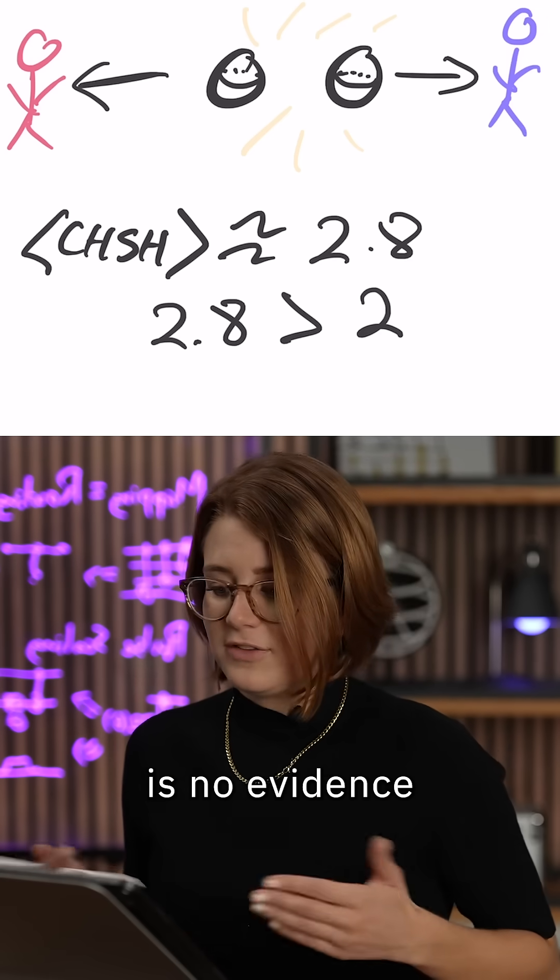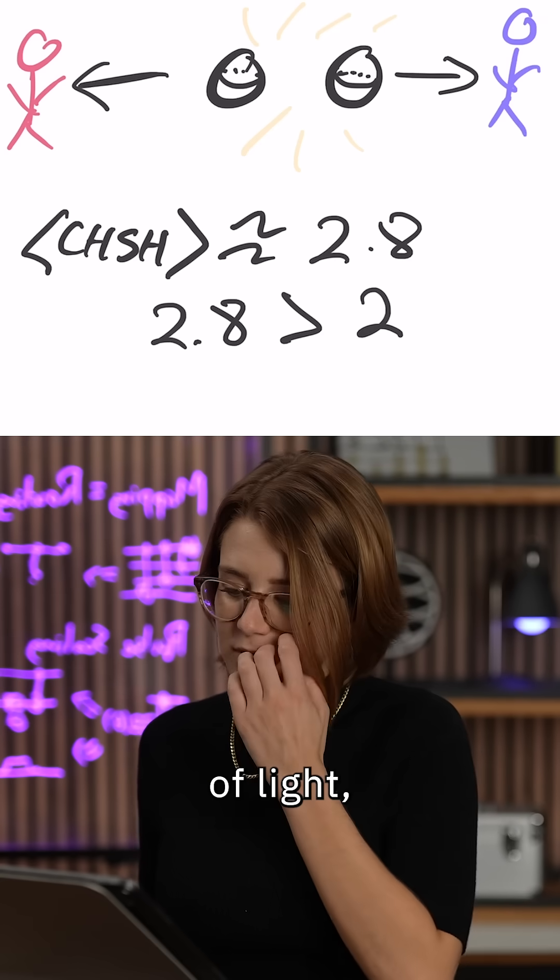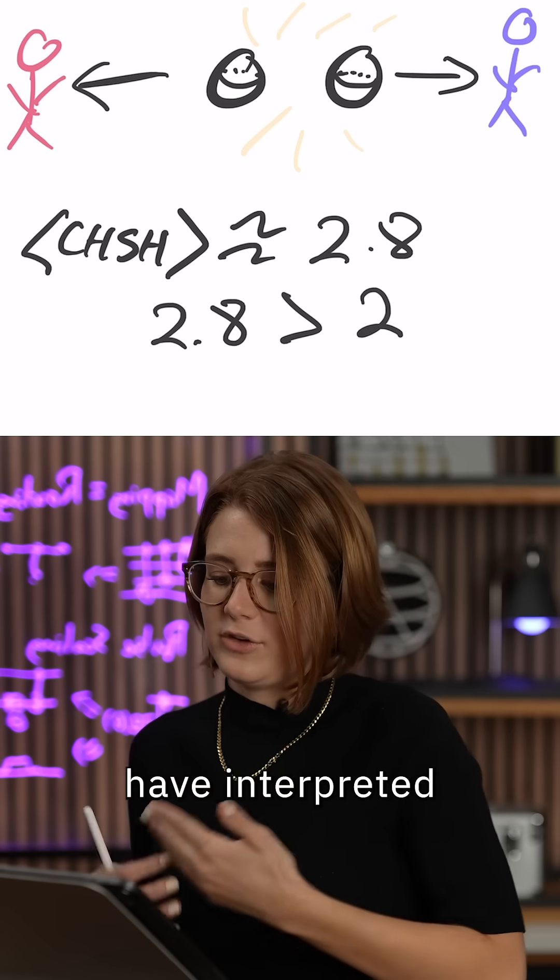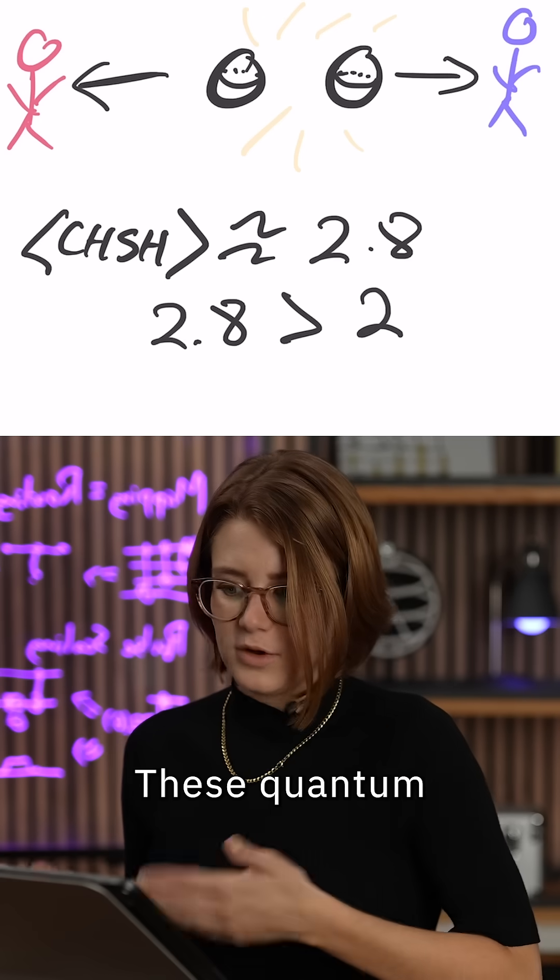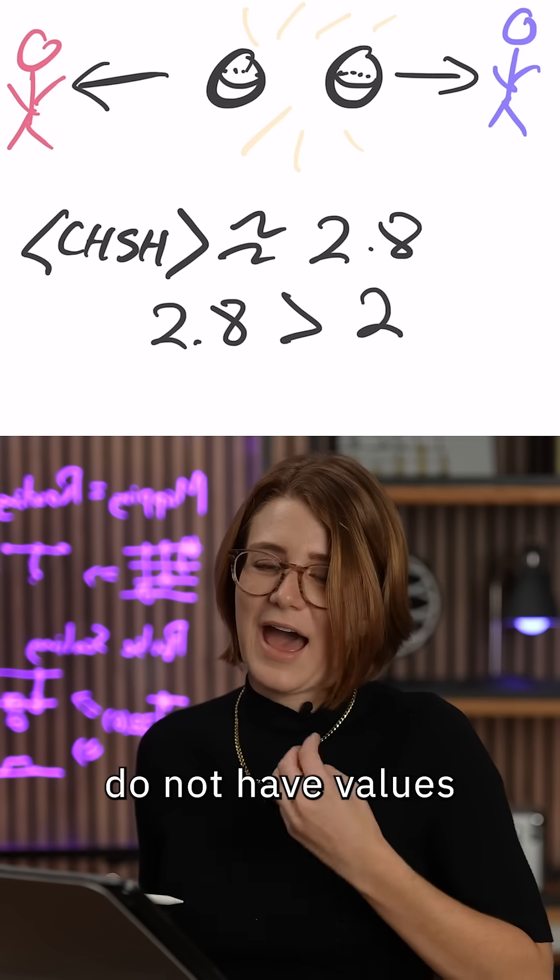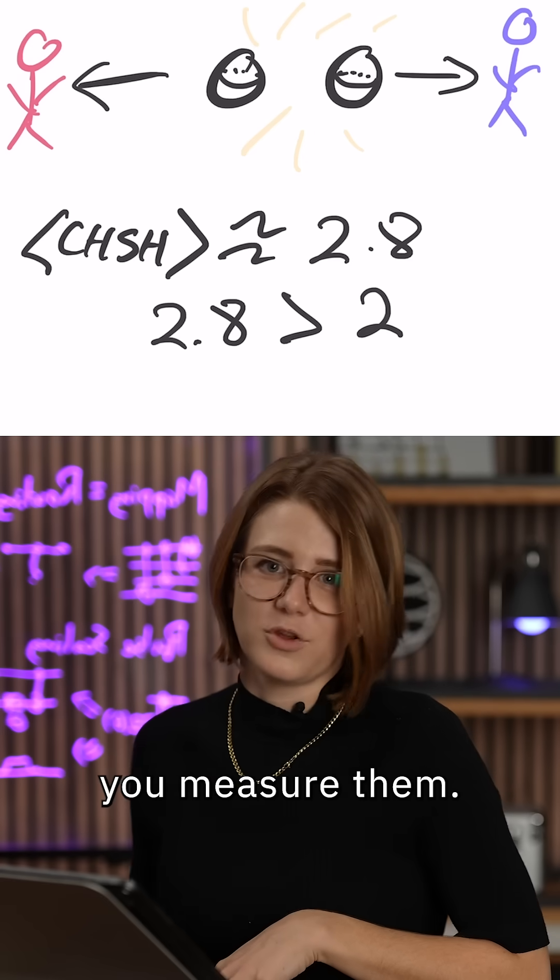And since there's no evidence of anything in the universe traveling faster than the speed of light, the way that most scientists have interpreted this is that we have to give up the idea of realism. These quantum particles actually do not have values that are specific to them before you measure them.